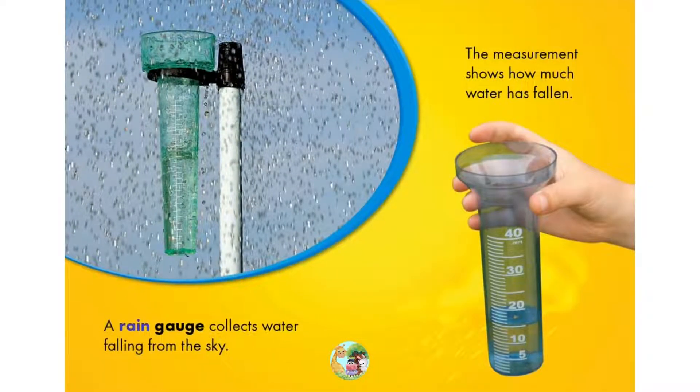A rain gauge collects water falling from the sky. The measurement shows how much water has fallen.